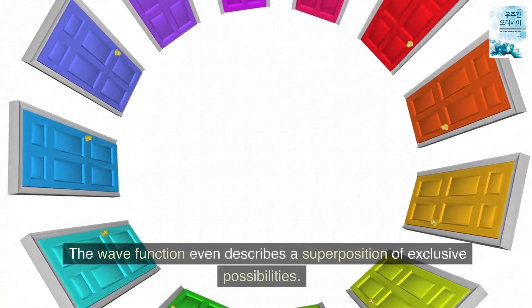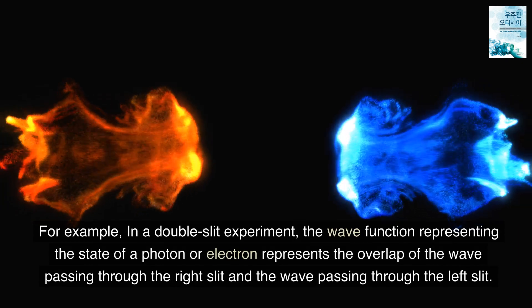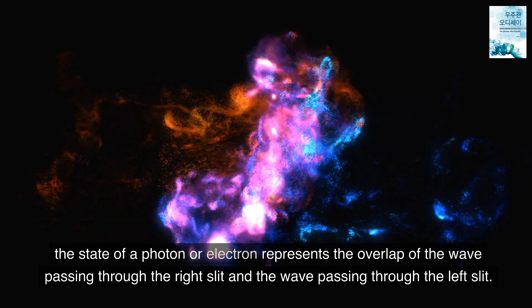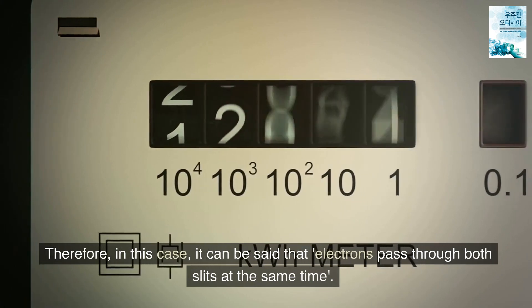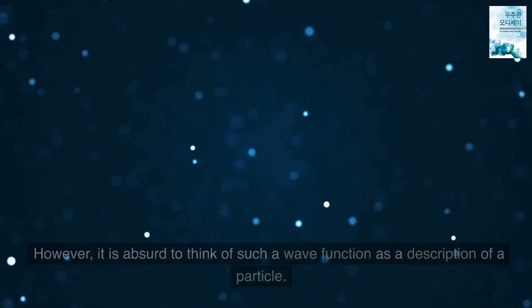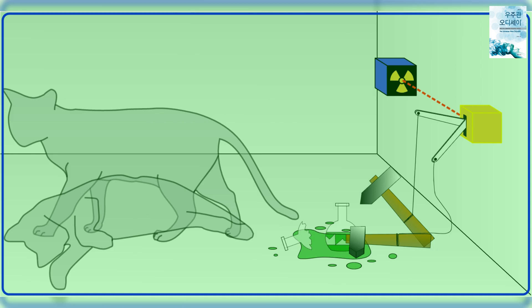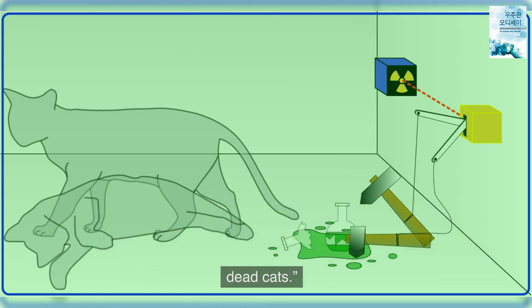The wave function even describes a superposition of exclusive possibilities. For example, in a double-slit experiment, the wave function representing the state of a photon or electron represents the overlap of the wave passing through the right slit and the wave passing through the left slit. Therefore, in this case, it can be said that electrons pass through both slits at the same time. However, it is absurd to think of such a wave function as a description of a particle. How could a particle pass through two holes at the same time? Even the Copenhagen interpretation opens the door to the imagination of the bizarre state of dead cats and living cats coexisting, and living and dead cats.